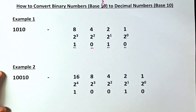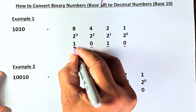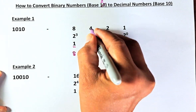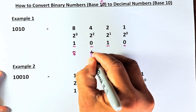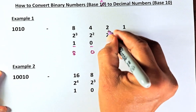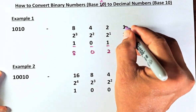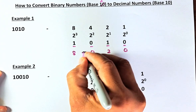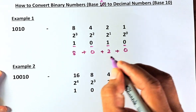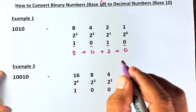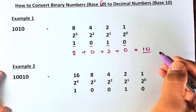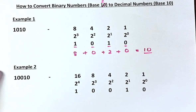So the last step is very simple — we are going to multiply. 1 times 8 is going to be 8, 0 times 4 is going to be 0, 1 times 2 is going to be 2, and 0 times 1 is going to be 0. Then we are going to add all these numbers: 8 plus 0 plus 2 plus 0, and the answer — the normal number for 1010 — is going to be 10.